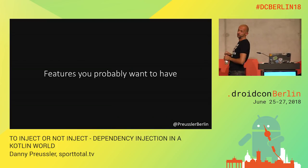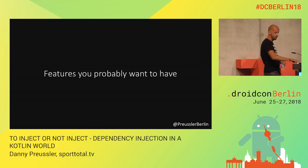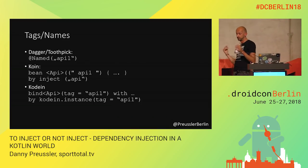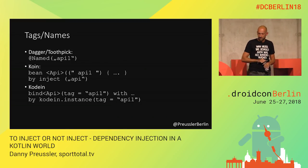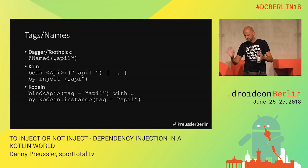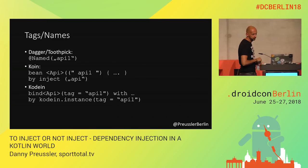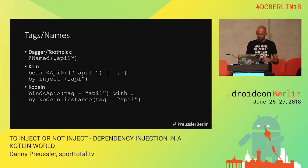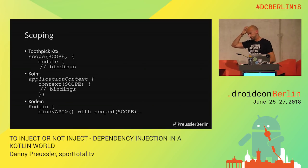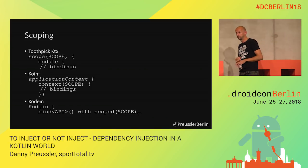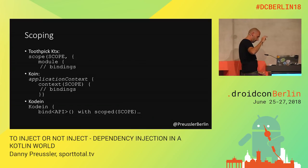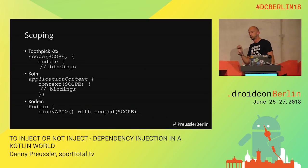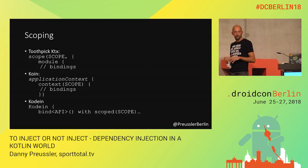Which features should you look into when deciding on a framework? Probably you want qualifiers — @Named is possible definitely in Koin and Codein, both when binding and when asking via the delegate. Scoping is a big topic. We use activity scopes and scope singletons — it is supported. But this is where you should definitely make a proof of concept, because I realized the definition of scopes is very different. I know other developers who moved to Koin and ran into problems because the way scopes are handled is a bit different there.